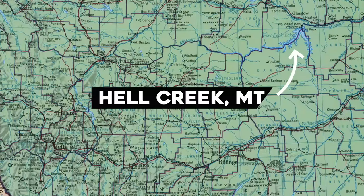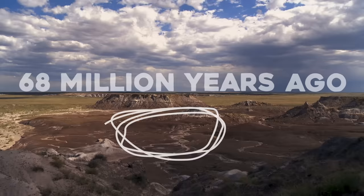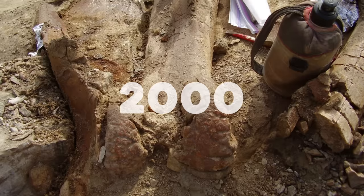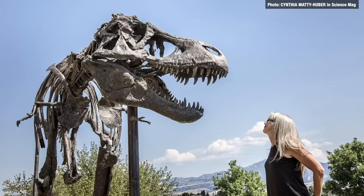This is Hell Creek, Montana. 68 million years ago, a small T-Rex died somewhere around here and over time, minerals replaced its bones which turned its body into a T-Rex fossil. In the year 2000, scientists dug it out of the ground and shipped some of it to a museum and some of it to a paleontologist named Mary Schweitzer.